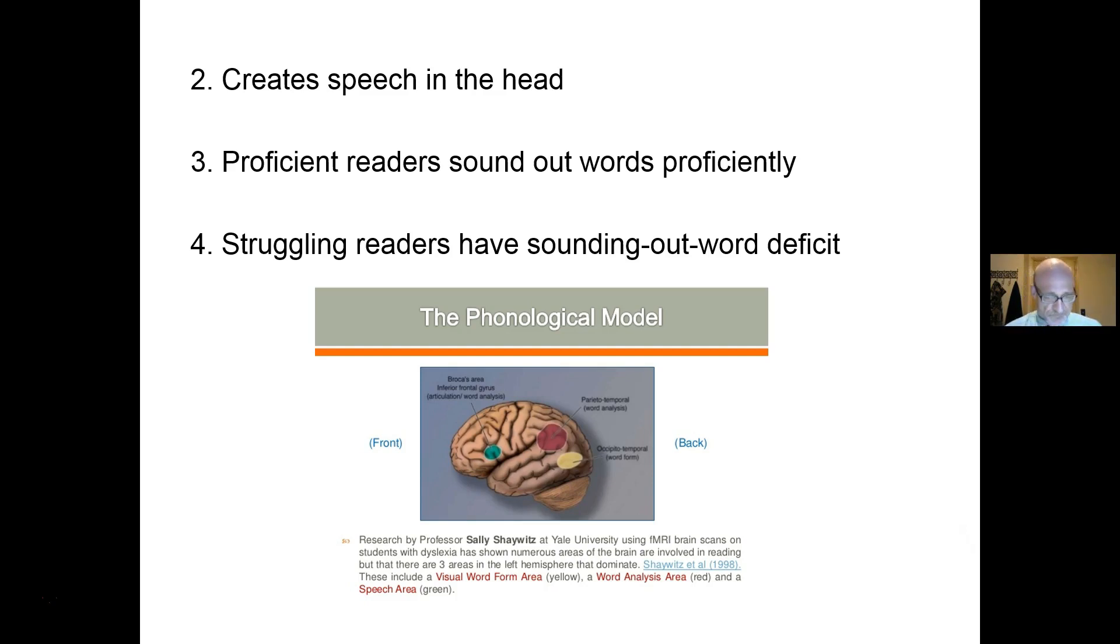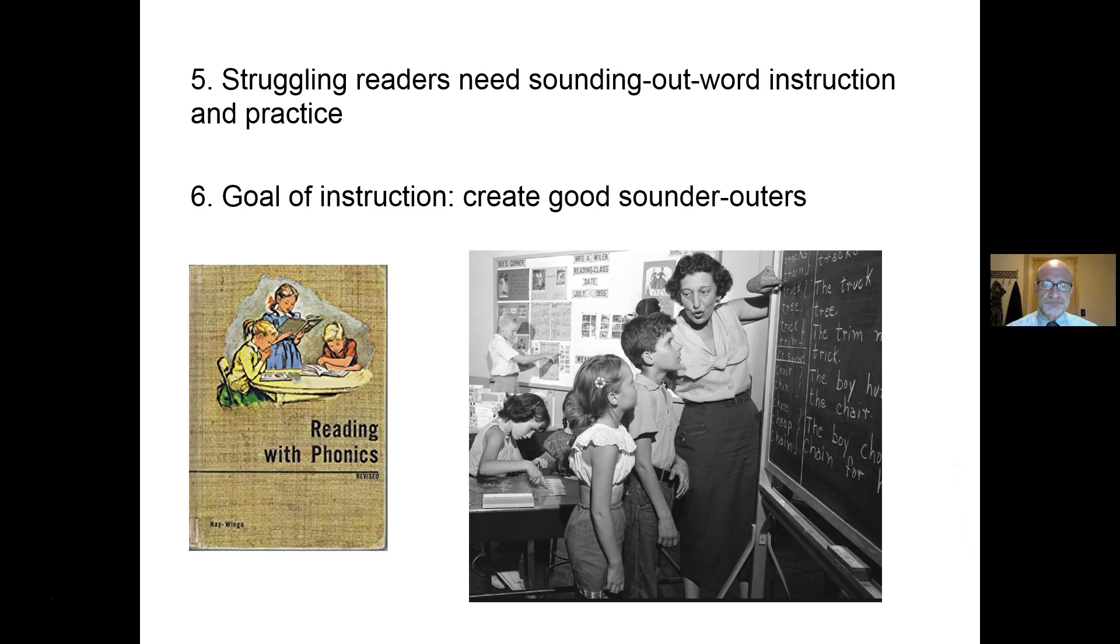Proficient readers, according to this model, are good sounder outers. They can sound out words proficiently. Struggling readers are bad sounder outers. They have word sounding out deficiencies. Struggling readers need sounding out word instruction and practice. That's how you create good sounder outers, according to this model.